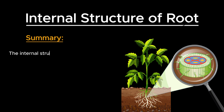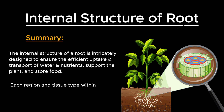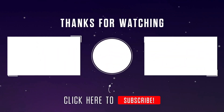The internal structure of a root is intricately designed to ensure the efficient uptake and transport of water and nutrients, support the plant, and store food. Each region and tissue type within the root plays a crucial role in these processes, contributing to the overall health and growth of the plant.